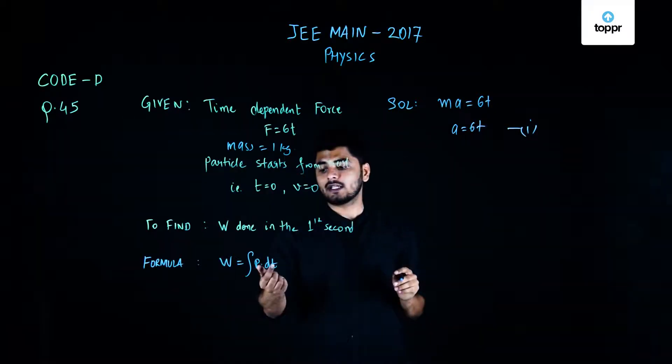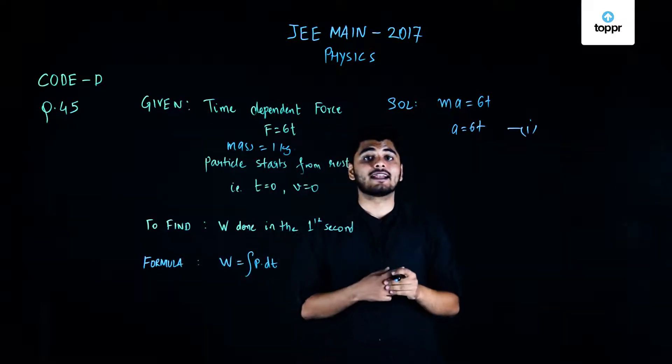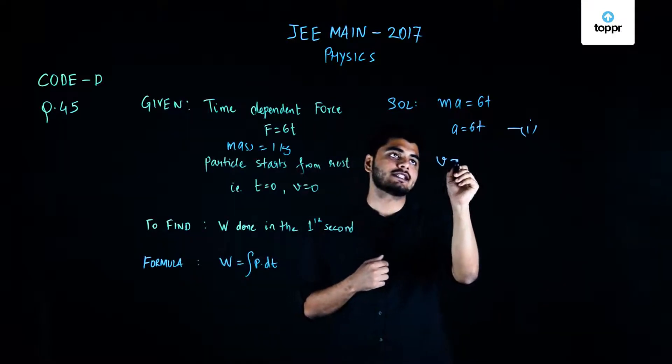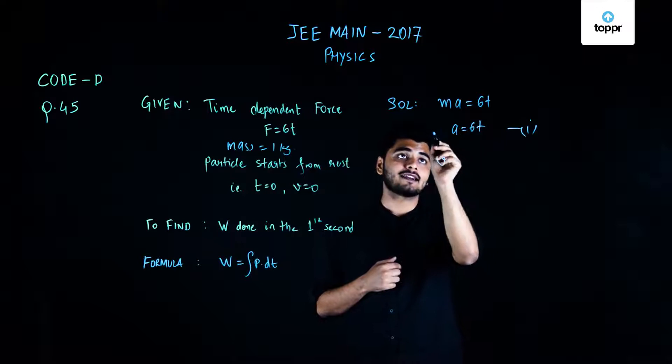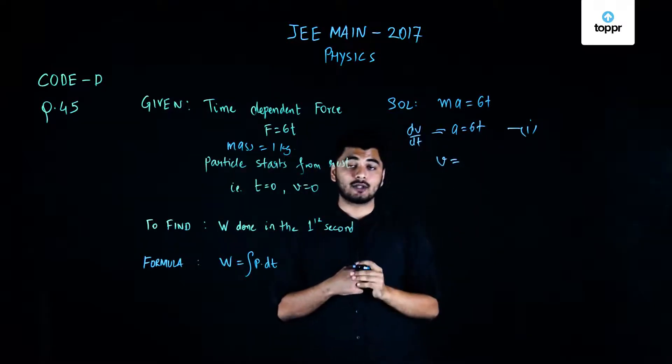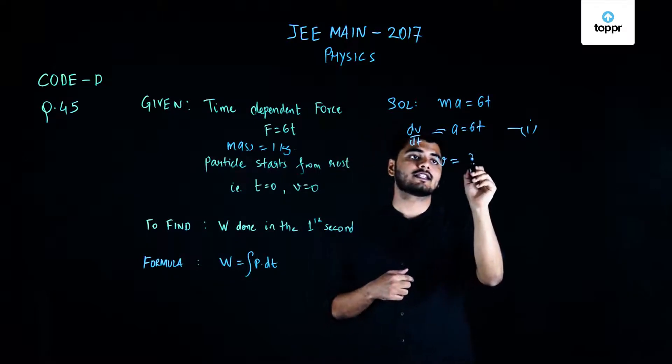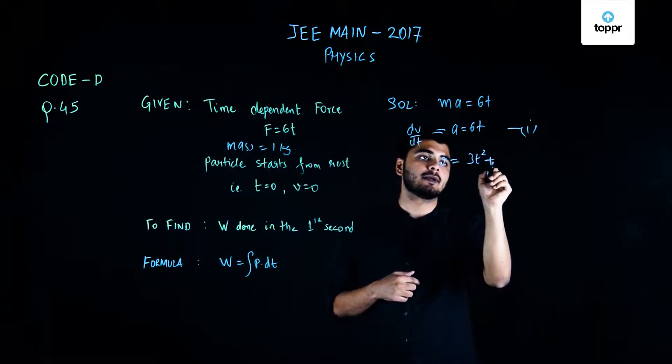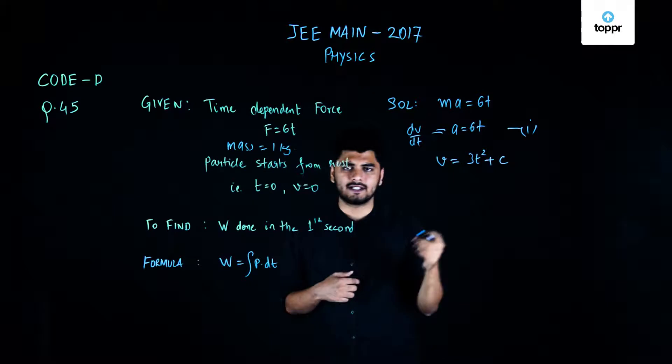Now I know that in order to calculate the power, I'll also need the value of velocity. So my velocity is nothing but, I can write my acceleration as nothing but dv by dt. So in calculating the value of v from here, I get it is equal to 3t square plus c, which is some constant of integration.